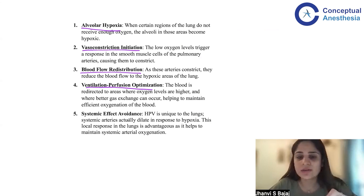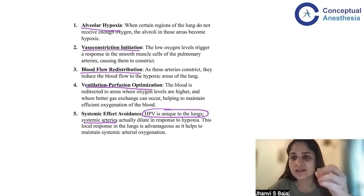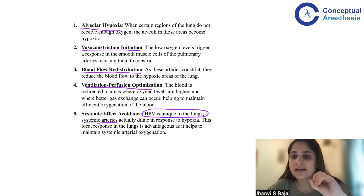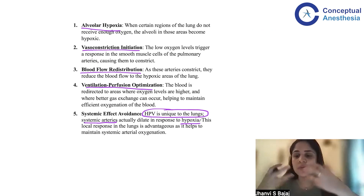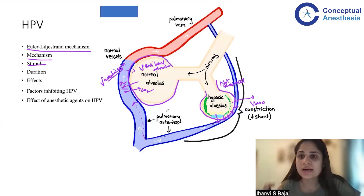An additional point worth adding: HPV is unique to the lungs. This does not happen in systemic circulation. Systemic arteries will never vasoconstrict in response to hypoxia — in fact, a coronary artery in a hypoxic area will dilate to try to absorb as much oxygen as possible. Systemic arteries have the opposite effect to HPV. So HPV is a phenomenon unique to the pulmonary vasculature.